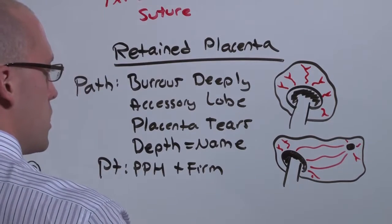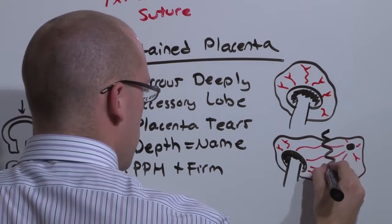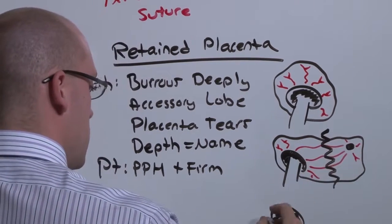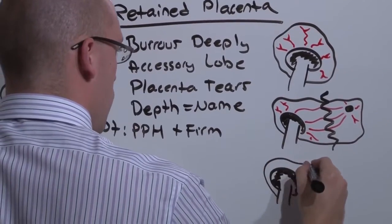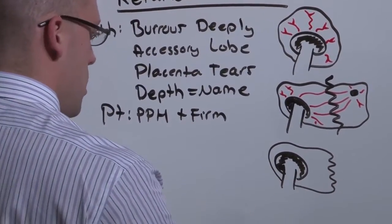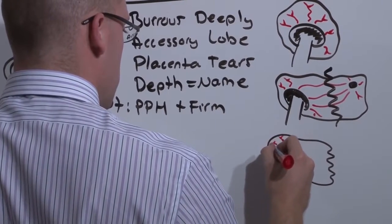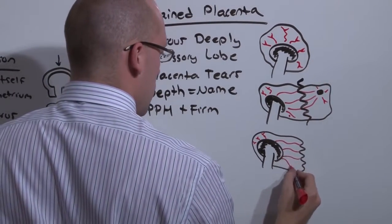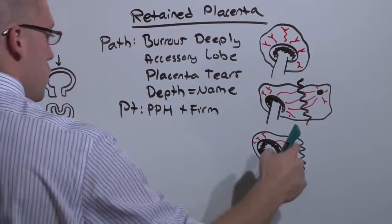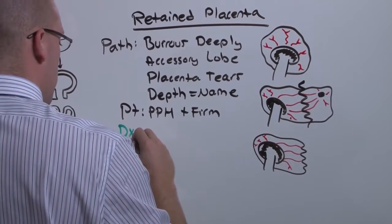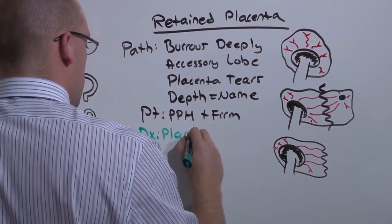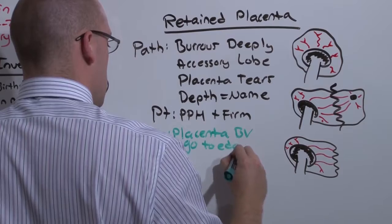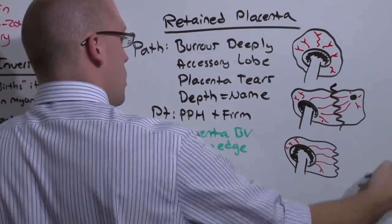And if you delivered the placenta and it tore, what you'd see when you inspected the placenta, you wouldn't actually see the tear site. But what you'd see is the normal blood vessels that never go to the surface and the blood vessels that were attached to the accessory lobe that go all the way to the edge. And this is why you look at every placenta every time, because the placenta will have blood vessels that go to the edge. And if you see blood vessels that go to the edge, it means that there's a part of the placenta left behind.